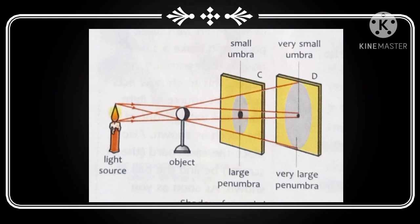The shadow formed by a point source of light is always uniformly dark, sharp at the edges, and bigger than the size of the object. But the shadow formed due to an extended source of light is smaller than the object when the light source is away from the object.